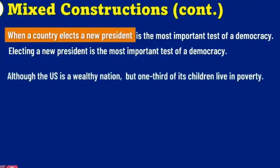'Although the U.S. is a wealthy nation, but one-third of its children...' You've got a coordinating conjunction there, and a coordinating conjunction cannot link a subordinate clause with a main clause. A coordinating conjunction can link two main clauses because they're the same — they're in parallel. But it cannot link disparate elements like a subordinate clause and a main clause.